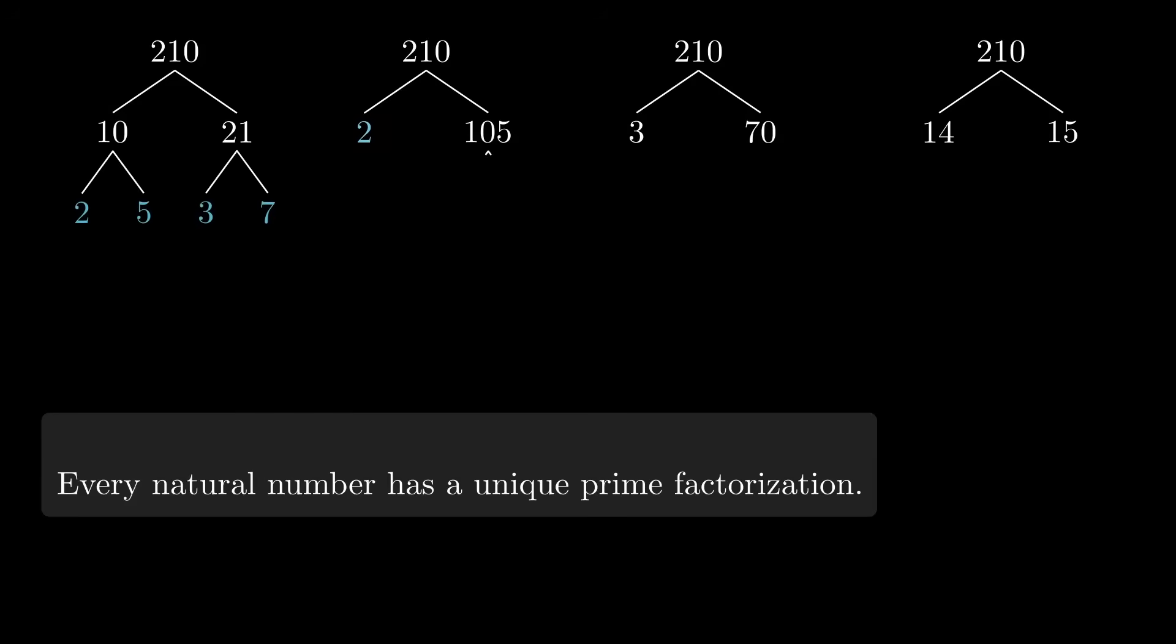But if we continue breaking down the factors until we only have primes, then we always get exactly the same result, 2 times 3 times 5 times 7, in some order. Why on earth should that be the case? It's really kind of spooky.